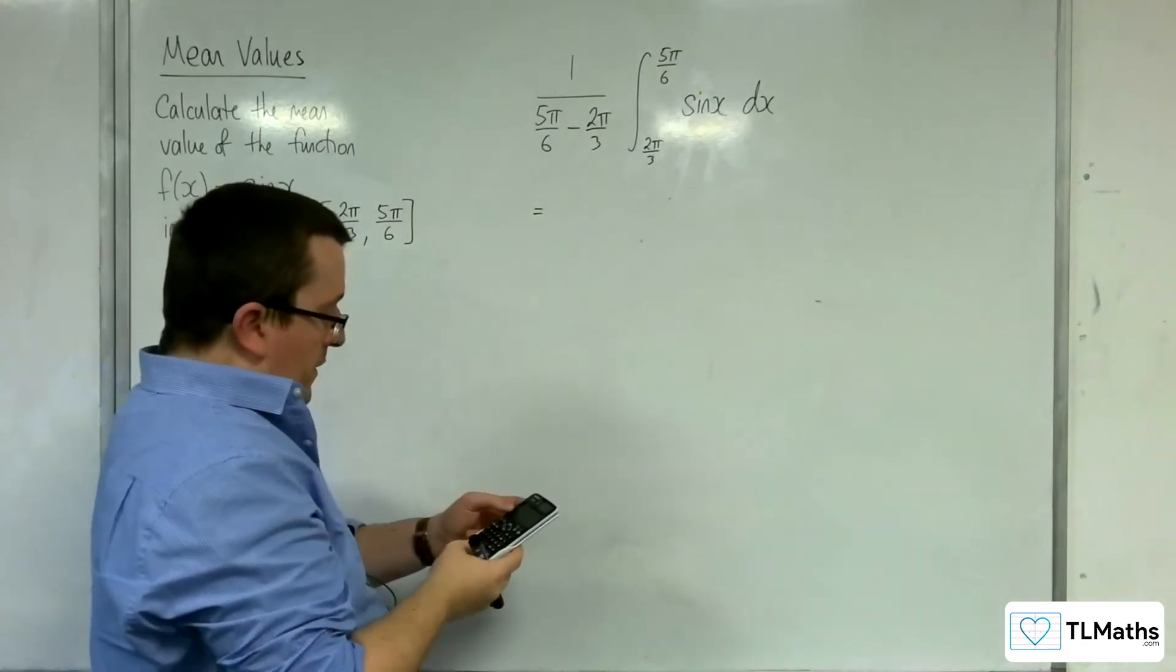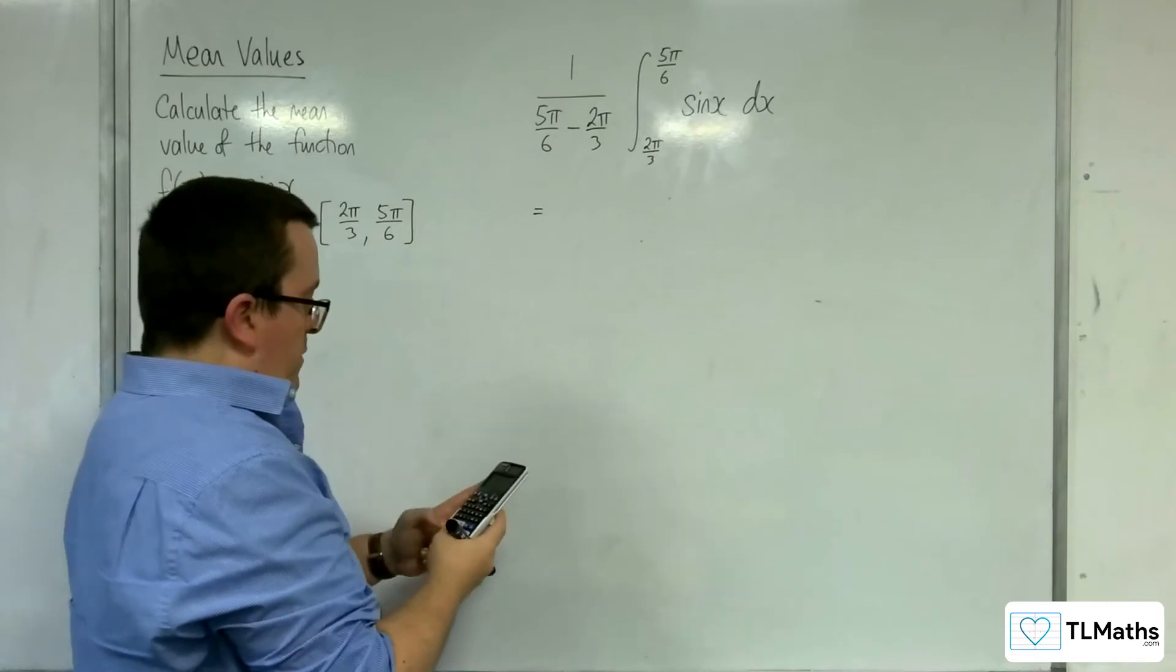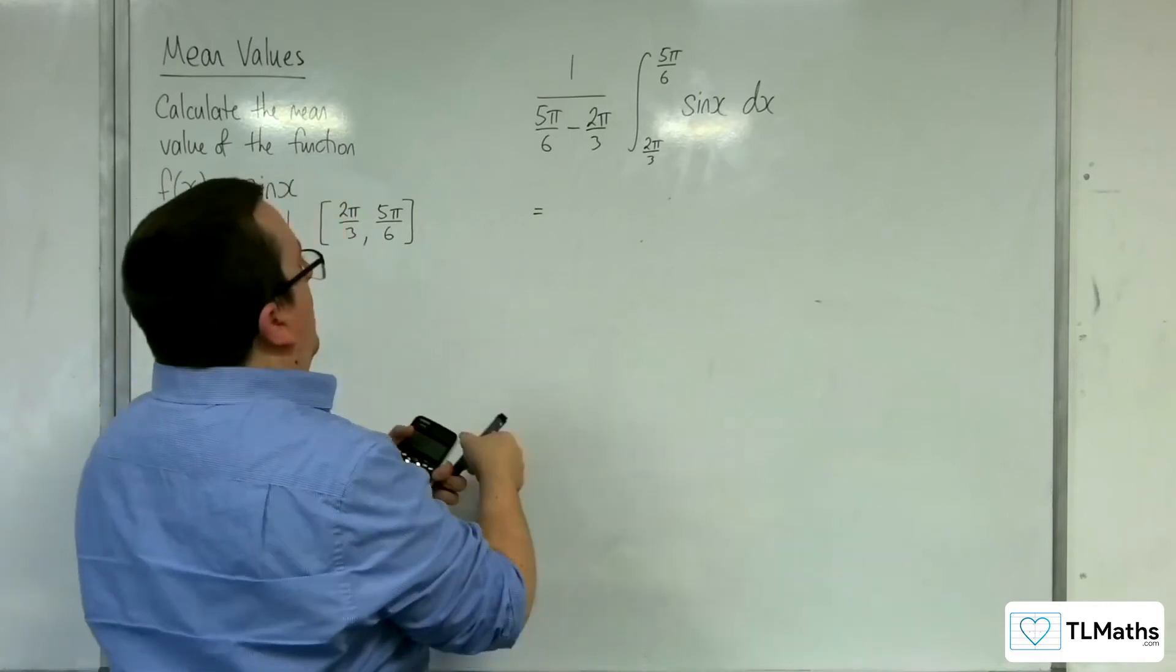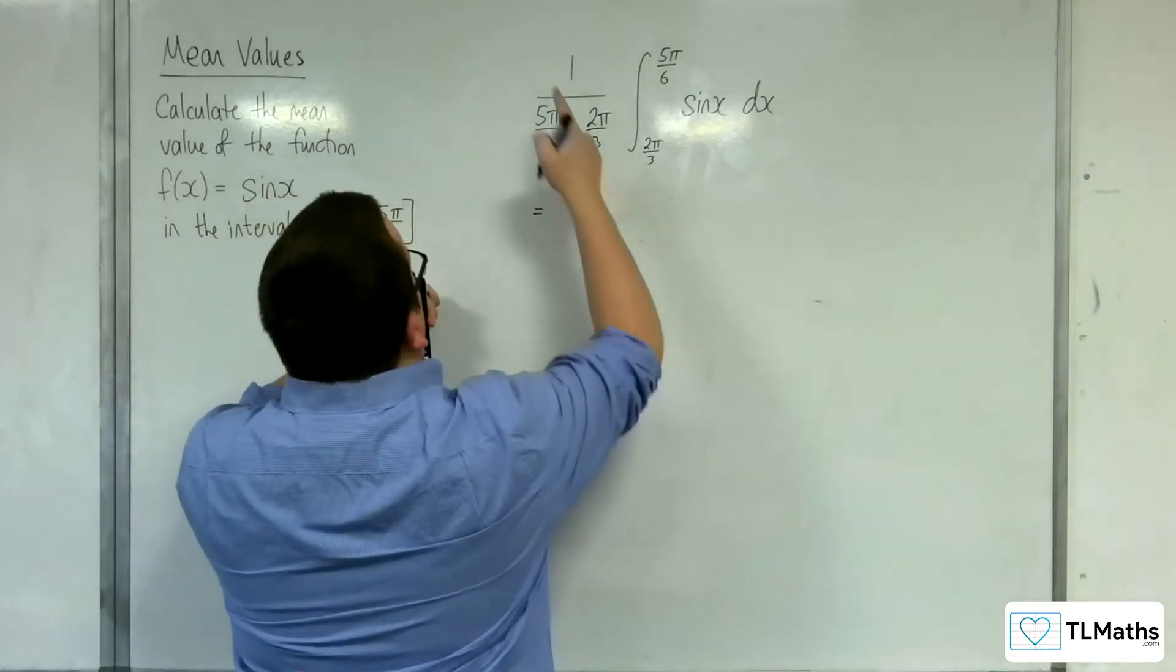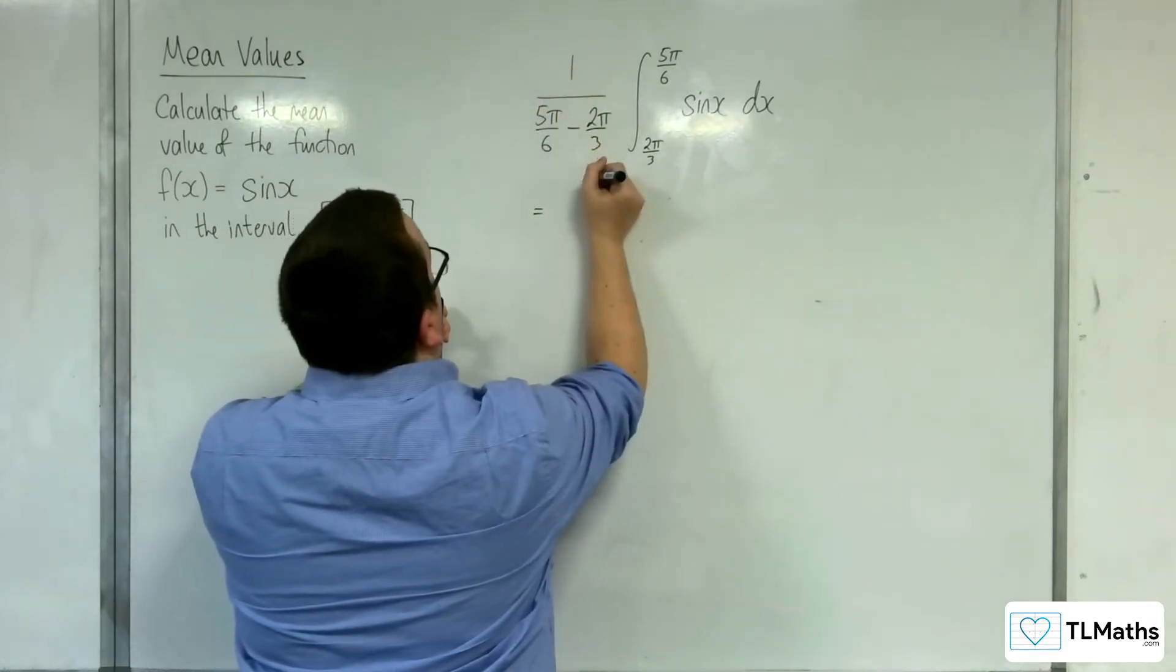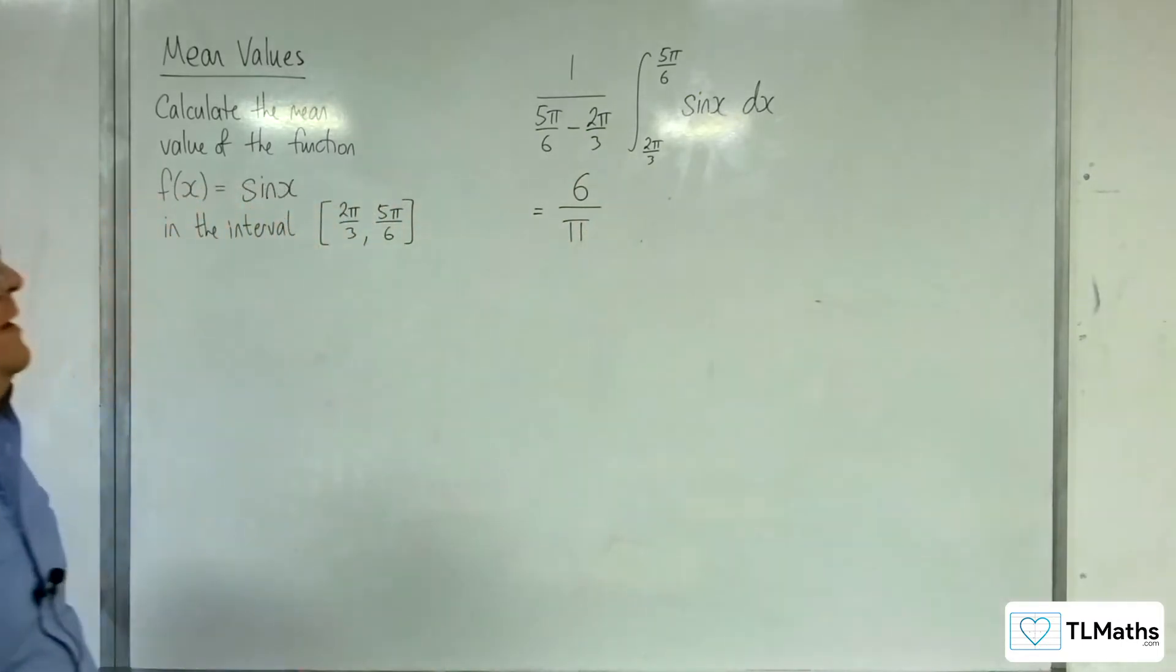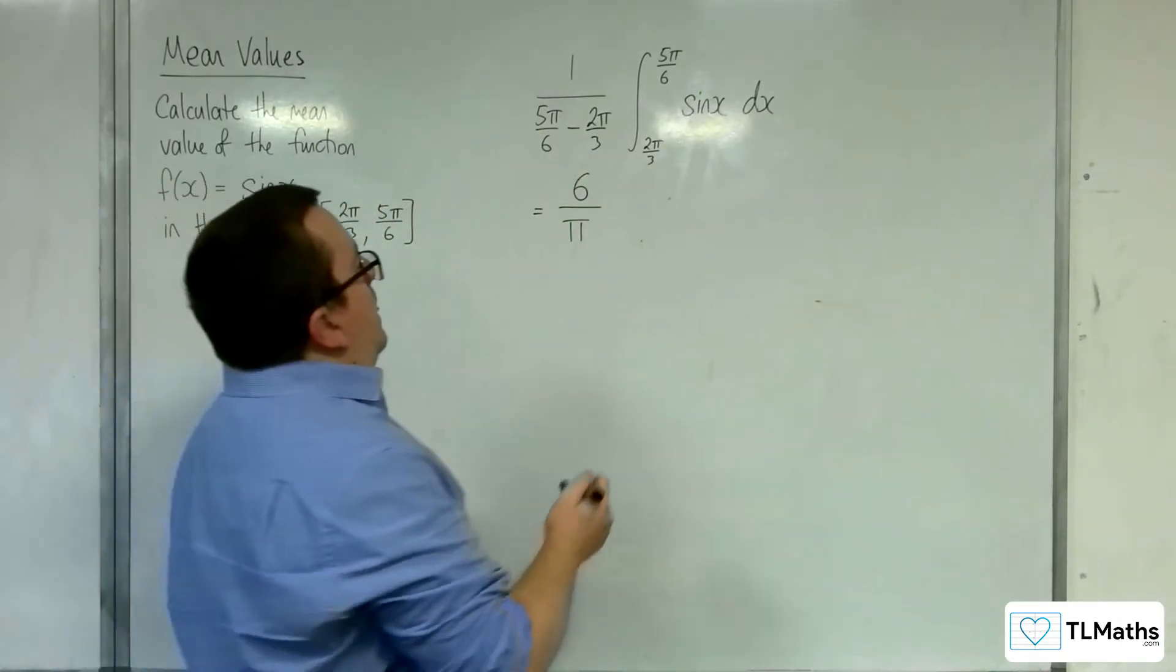So first of all, 5 pi over 6 take away 2 pi over 3 is 1 sixth of pi. So 1 over 1 sixth of pi is the same as 6 over pi. That would be the same thing there.